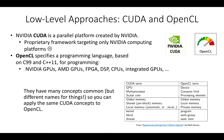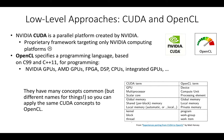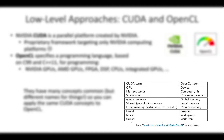NVIDIA CUDA is one of the most popular frameworks in the low-level approach category. CUDA is a parallel platform created and owned by NVIDIA, which means CUDA is a proprietary framework targeting only NVIDIA computing platforms — there is no CUDA for GPUs that are not NVIDIA's. Instead, OpenCL — be careful not to confuse it with OpenGL, which is for graphics — allows us to program a broad range of GPUs and accelerators like FPGAs. OpenCL specifies a programming language based on C for programming a broad range of GPUs. CUDA and OpenCL have many concepts in common, but they use different names.